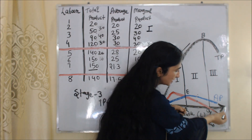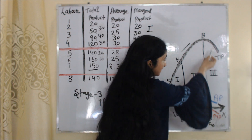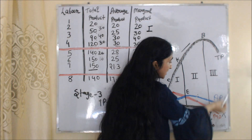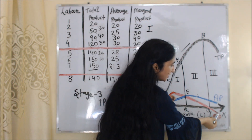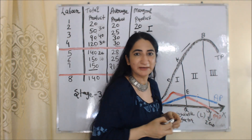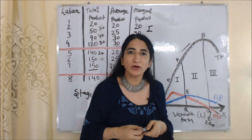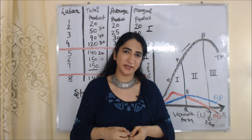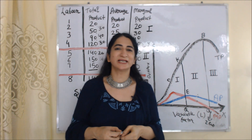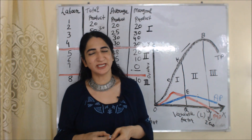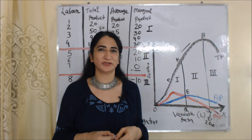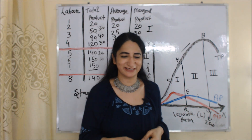So during the third stage, TP is reducing and marginal product becomes negative. This is all about the Law of Variable Proportions. Thank you so much for watching this video. Take care.